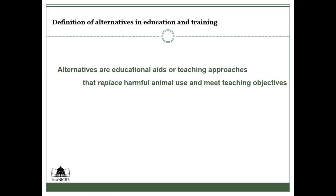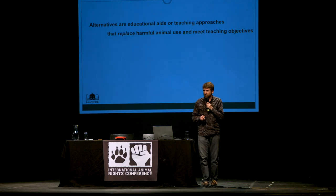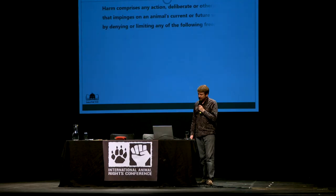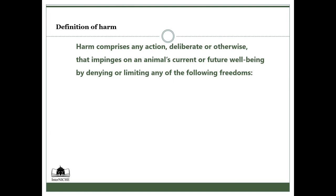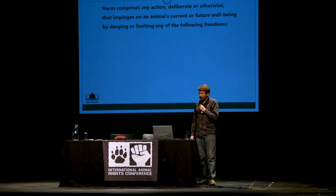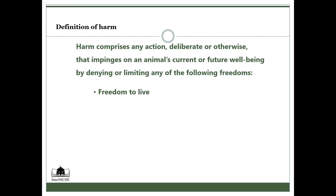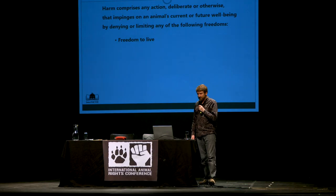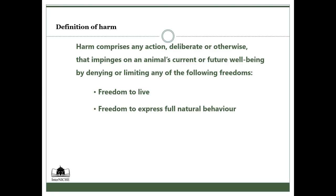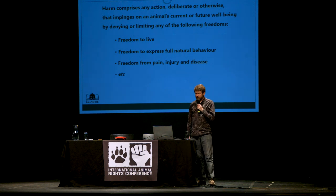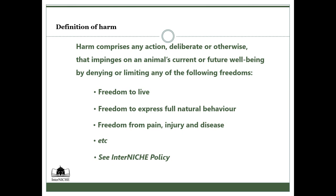So what are alternatives? They're educational aids or teaching approaches that can replace harmful animal use and meet teaching objectives. It's very important to be looking at the quality of education and the teaching objectives when having a conversation with a teacher or with students. We also need to define harm. Our definition of harm includes any action that limits an animal's freedom to live — so killing is a form of harm, no matter how quickly or humanely it's done — as well as freedom to express full natural behavior, and freedom from pain, injury, and disease.